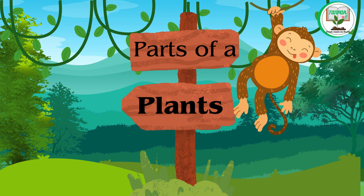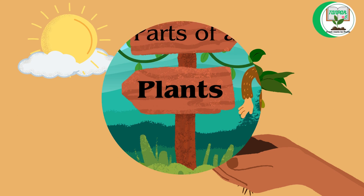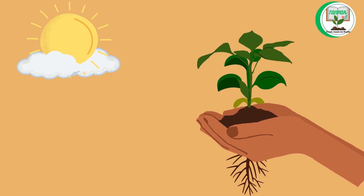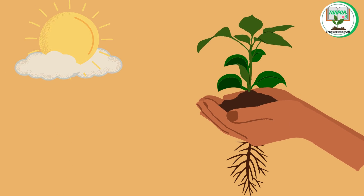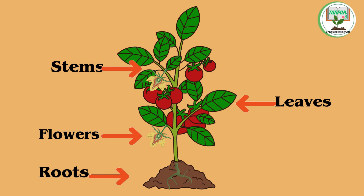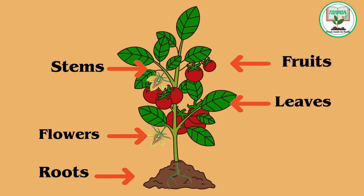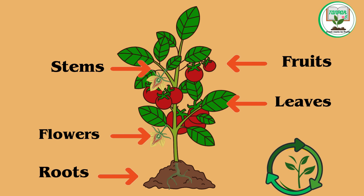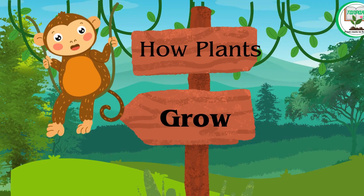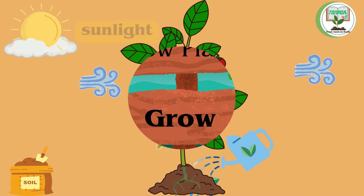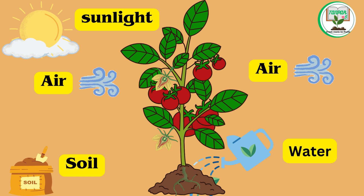Parts of a plant: plants have different parts that help them grow and survive. These parts include roots, stems, leaves, flowers, and fruits. Each part plays an important role in the plant's life cycle.